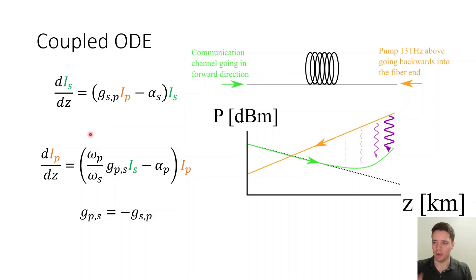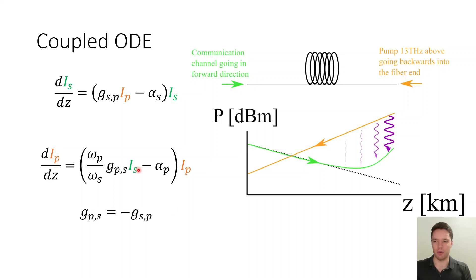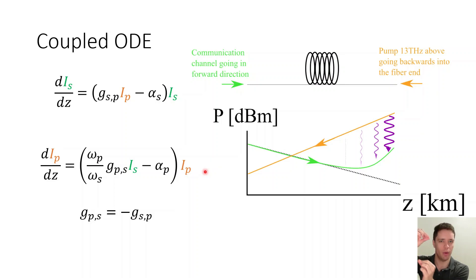Similarly, we can write down a similar equation for the pump — that's going to lose power as you move from left to right, according to the strength of the signal. The important point about modeling this is that because the pump is actually propagating from the right to the left and decreasing its power in this direction, we have to do the simulation assuming we have a very low power pump starting at z=0, which then increases in power as we go to the right. So we have to flip the sign of this attenuation — that's a small but important detail.